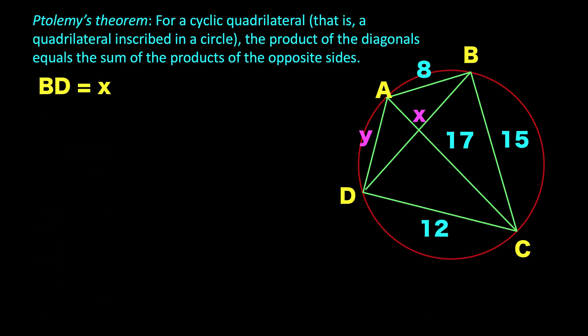We need to assign first the length of diagonal BD, and let X be that length. Then, the product of the diagonals are 17 and X. So, we have 17X. That is equal to the sum of the products of the opposite sides.